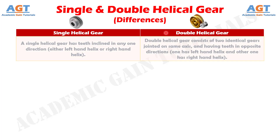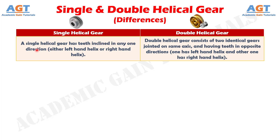Difference number 1: a single helical gear has teeth inclined in any one direction, either left hand helix or right hand helix. Whereas, double helical gear consists of two identical gears joined on the same axis, having teeth in opposite directions — one has left hand helix and the other has right hand helix.